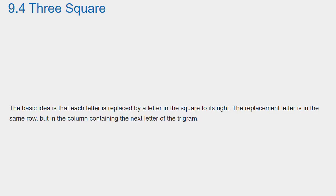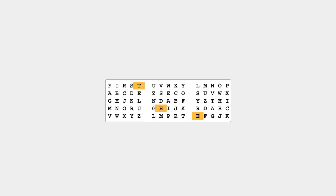The basic idea is that each letter is replaced by a letter in the square to its right. The replacement letter is in the same row but in the column containing the next letter of the trigram. Suppose we wish to encipher the trigram T-H-E. The first letter is T, the second letter is H, and the third letter is E. We encipher using the T in the first square, the H in the second square, and the E in the third square, like this.